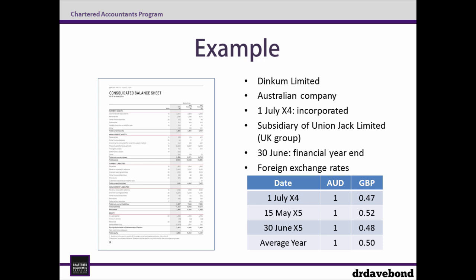We've got an exchange rate for the start of the year of one Aussie equal to 47 pence. On the 15th of May the Aussie has strengthened to 52 pence and then weakened again to 48 pence by the 30th of June. The average rate for the year is one Australian dollar equaling 50 pence.